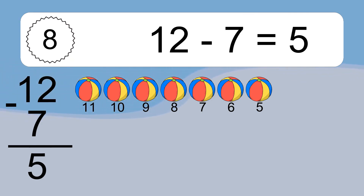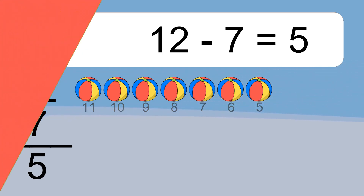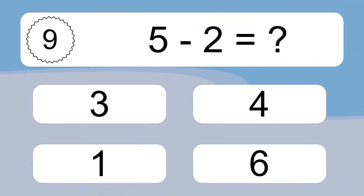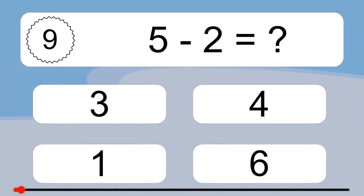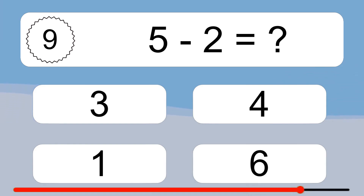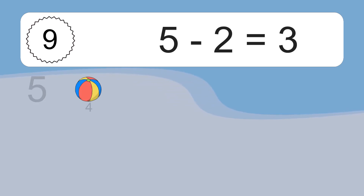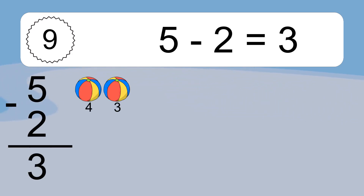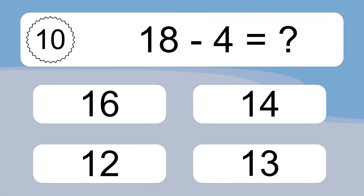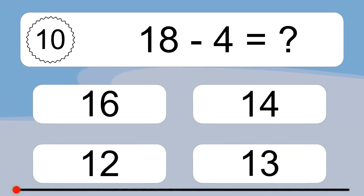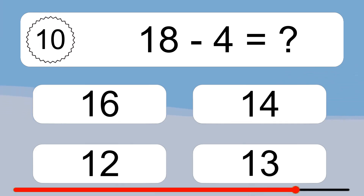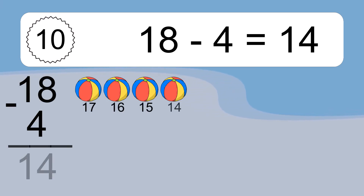11, 10, 9, 8, 7, 6, 5. 5 minus 2 equals what? 5 minus 2 equals 3. Let's count it: 4, 3. 18 minus 4 equals what? 6 minus 4 equals 14. Let's count it.